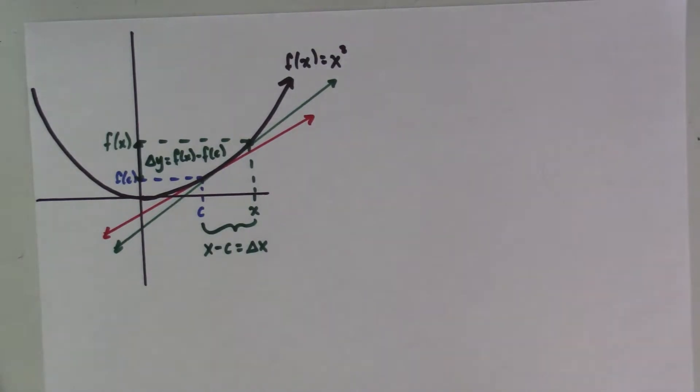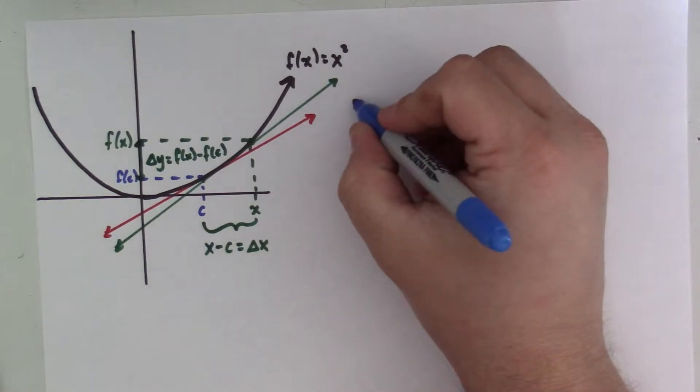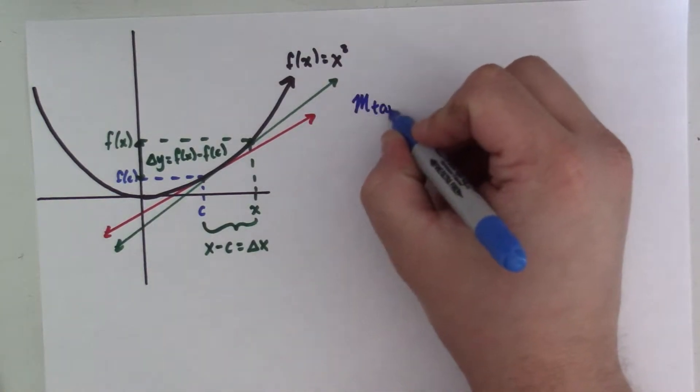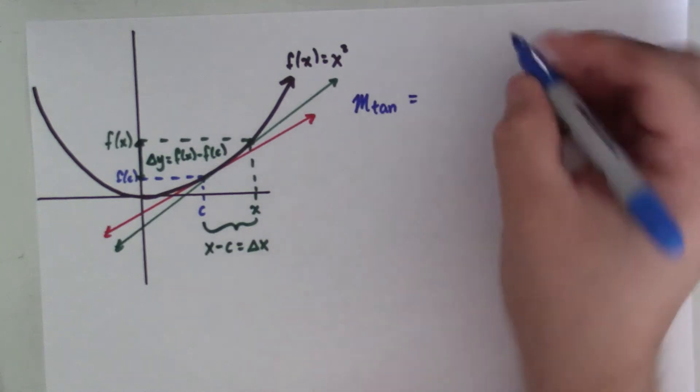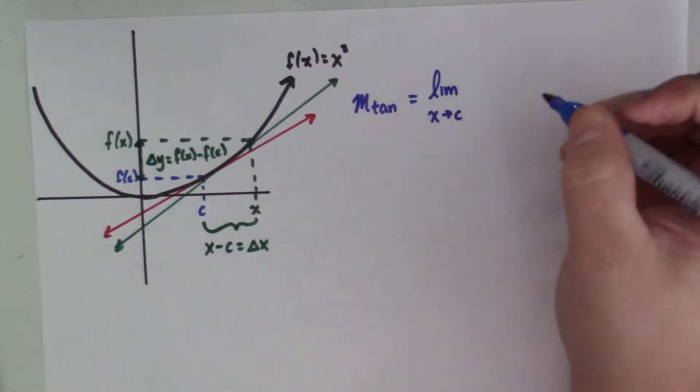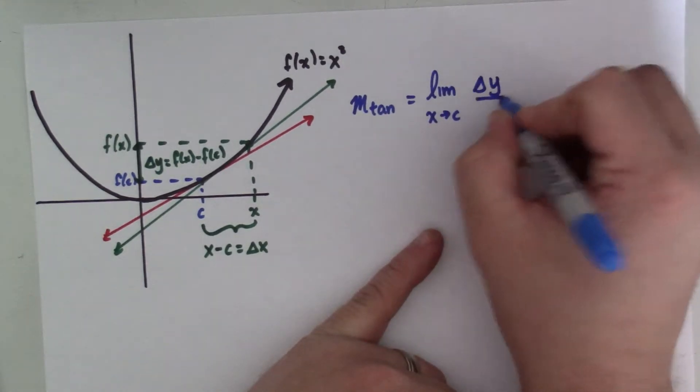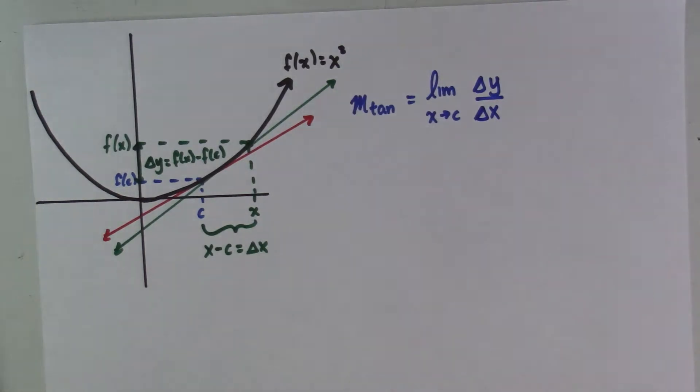So we're going to say the slope of the tangent line equals the limit as x goes to c of the change in y over the change in x.